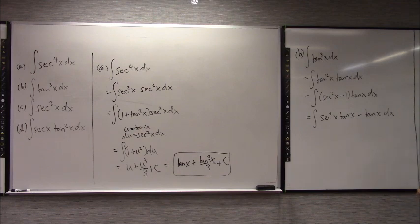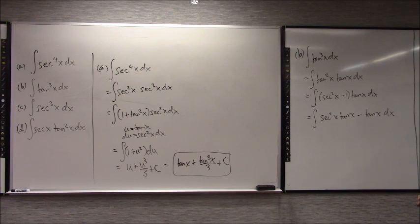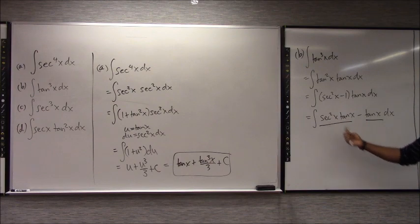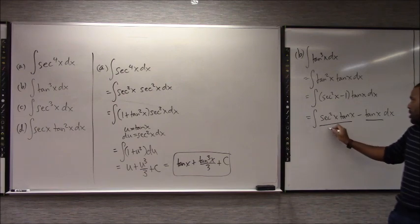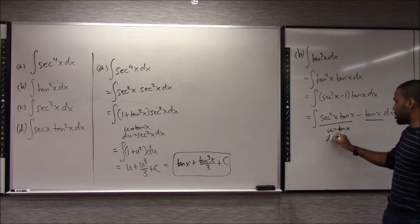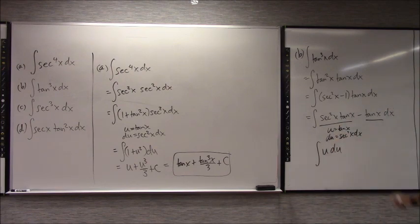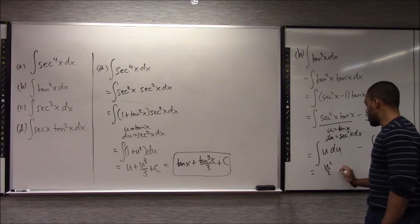If u equals secant x, du equals secant x times tangent x dx. Then you can do the first part of this integration, then do the second part minus tangent x dx — do one at a time. A substitution can work, and it turns out that either secant or tangent could be the substitution. If your u equals tangent, du is secant squared; if u is secant, du is secant times tangent. Either way, you're fine.